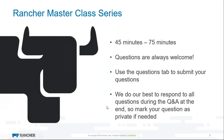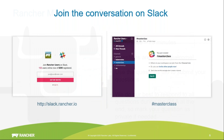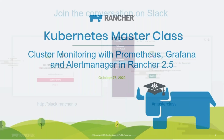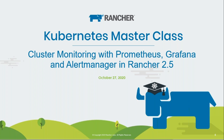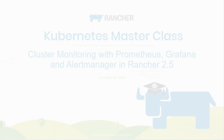A few details about the class: these classes will run between 45 to 75 minutes with a presentation and lots of demo content. If you have any questions, please feel free to ask them along the way using the questions tab in the GoToWebinar panel. You can also join our masterclass channel on the Rancher user Slack at slack.rancher.io. With that, I'll hand it over to our speaker today, Bastian.